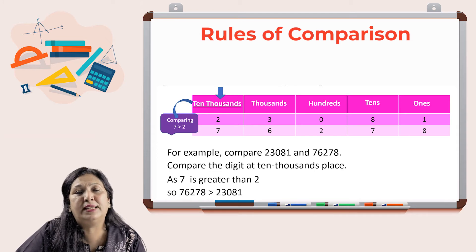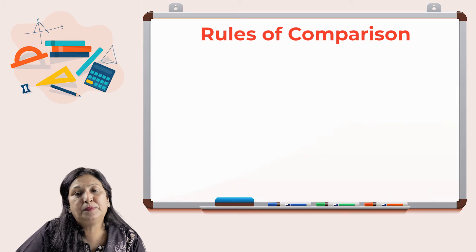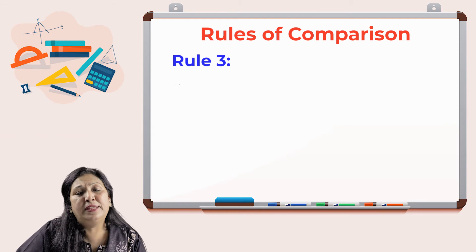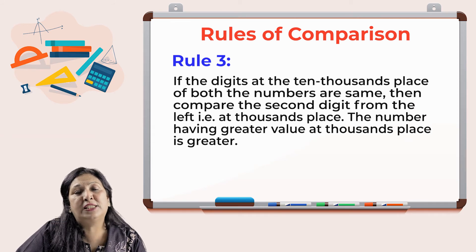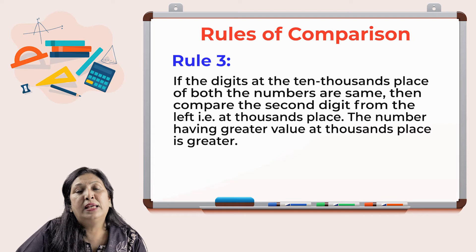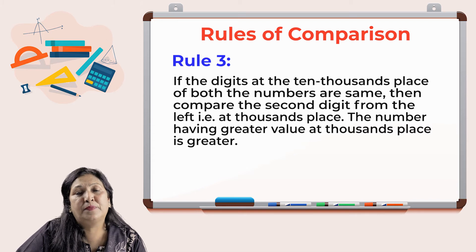Rule three: If the digits at the ten thousands place of both the numbers are same, then compare the second digit from the left, that is the number at thousands place. The number with higher value at thousands place is greater.